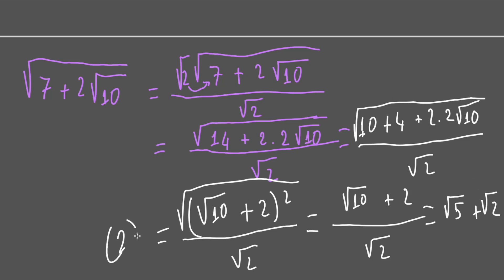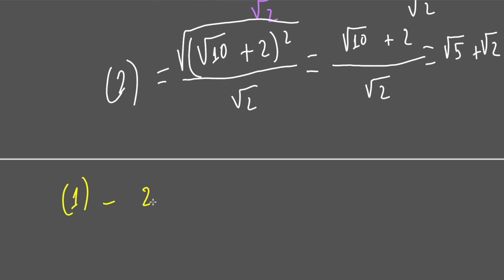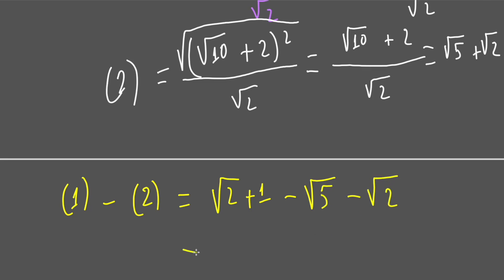Combining this value with the first one, we have (square root of 2 plus 1) minus (square root of 5 plus square root of 2). This equals 1 minus square root of 5. So the final result of this expression is 1 minus square root of 5.